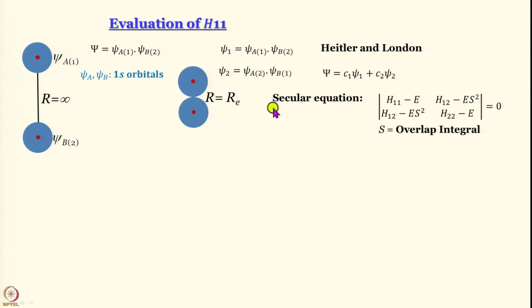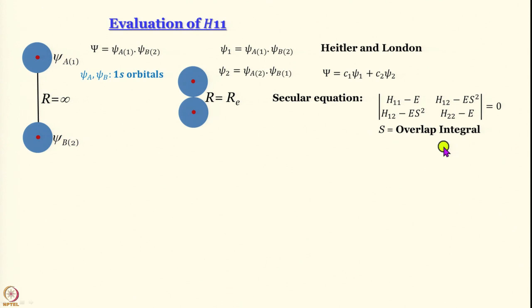We wrote the Schrödinger equation using the Heitler-London wave function, and in the usual manner we set up the secular equation. We simplified it a little and arrived at the concept of the overlap integral, which depends on the extent of overlap of the two wave functions involved in bonding. Next, we need to evaluate the integrals H_11, H_12, and H_22, and we start with H_11.